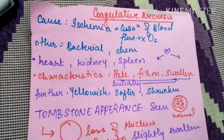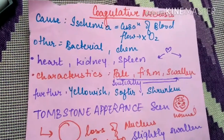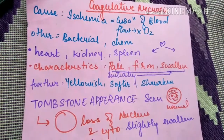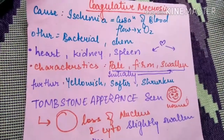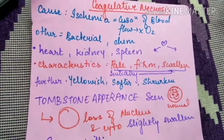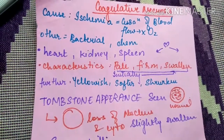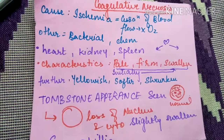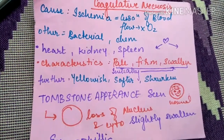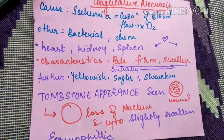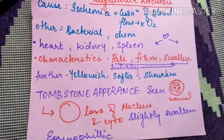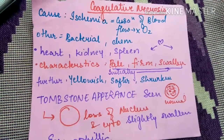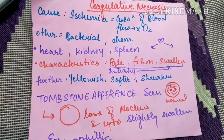Coagulative necrosis occurs due to ischemia, where cessation of blood flow occurs and blood supply is very less. Other causes may be bacterial or chemical. This mainly occurs in heart, kidney, or spleen. Characteristics are initially pale, firm, and swollen, further changing to yellowish, softer, and shrunken. A tombstone appearance is the main characteristic of coagulative necrosis.